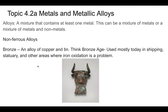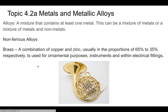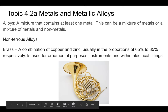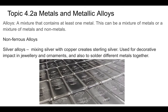Brass is a combination of copper and zinc, and you can see the proportions on screen. It's used for ornamental purposes like doorknobs, and of course for instruments — like a French horn — and electrical fittings. Copper is a very good conductor of electricity.